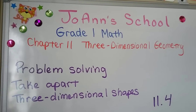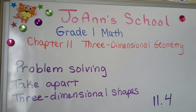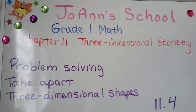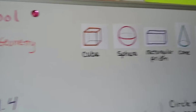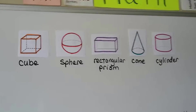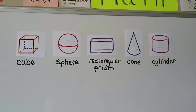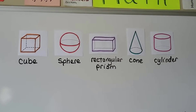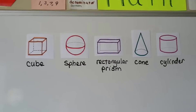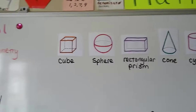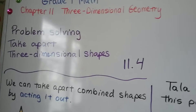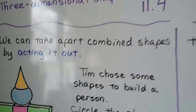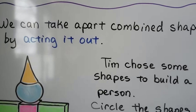Problem solving: take apart three-dimensional shapes, lesson 11.4. All through chapter 11 we've been learning about three-dimensional shapes — the cube, the sphere, the rectangular prism, the cone, and the cylinder. They're also called 3D shapes. We put a number three for the word 'three' and a D for 'dimensional,' and we can take apart combined shapes.